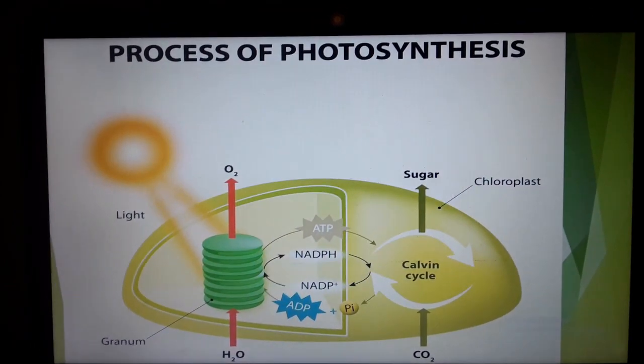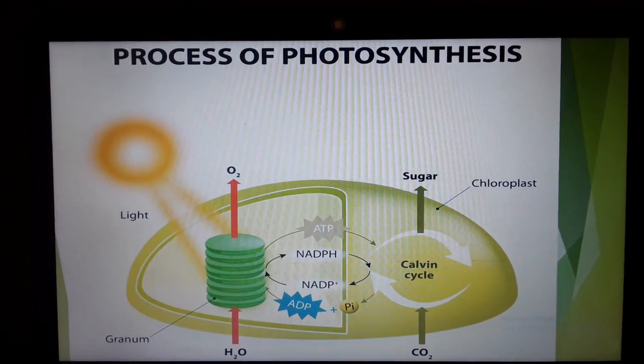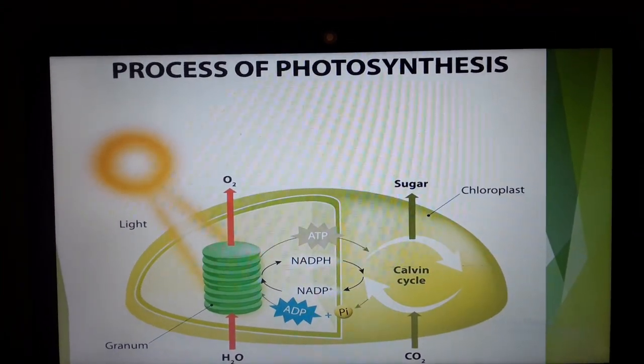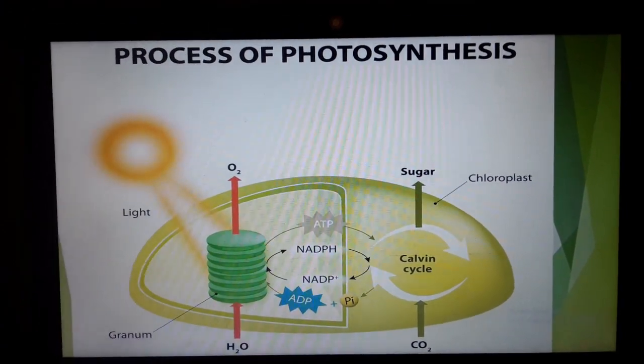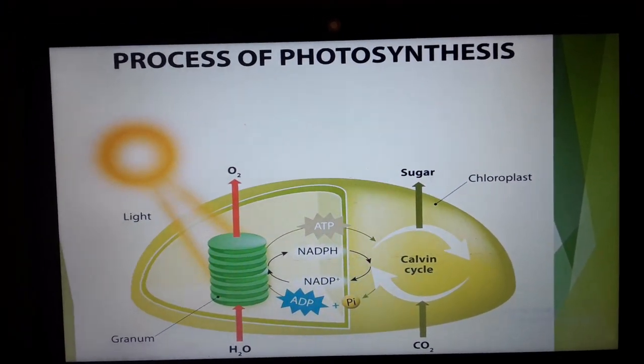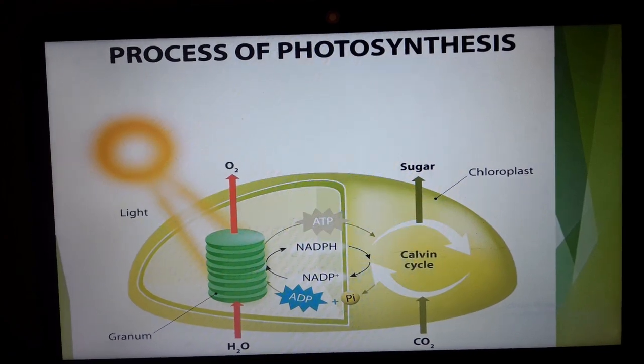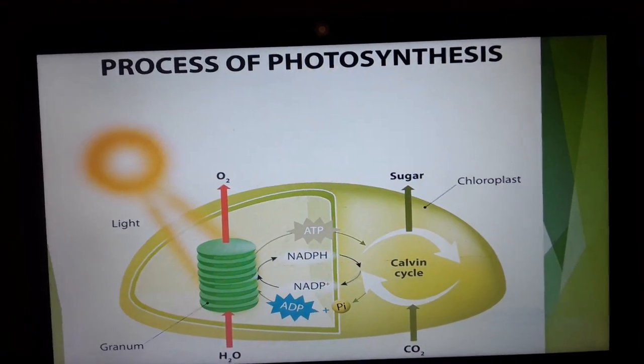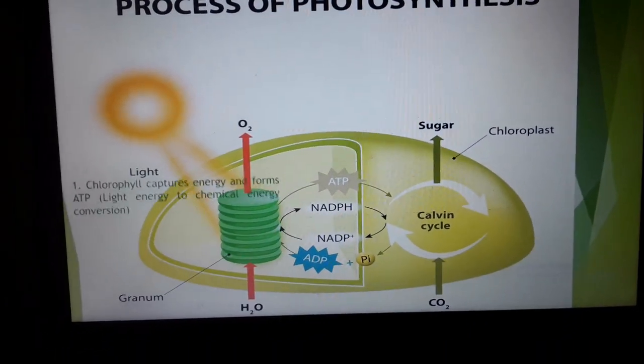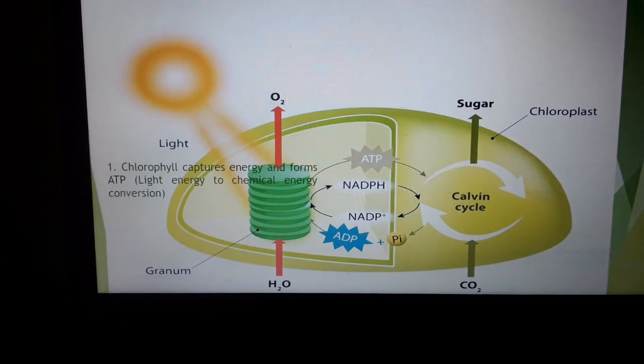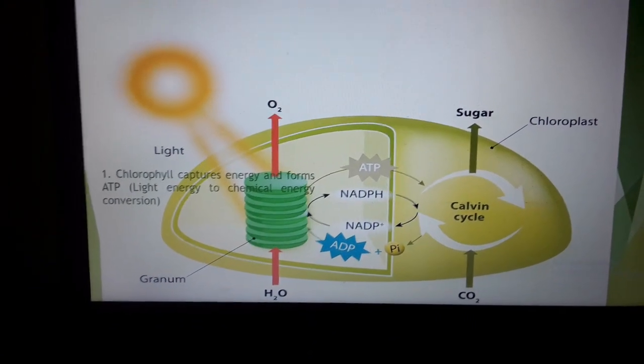But, after few moments, when the electrons of this chlorophyll coming to its original position, the extra energy released. Whatever the energy is captured, it is released. That one is helped to formation of ATP and PI and already formed and the ATP and PI will form the ATP. So, the first point. Chlorophyll captures energy and forms ATP. So, here light energy to chemical energy conversion done.